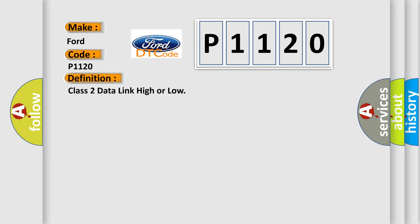The basic definition is class 2 data link high or low. And now this is a short description of this DTC code.